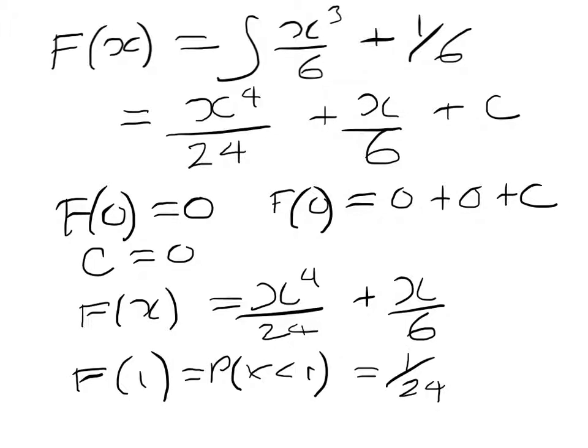So that will equal 1 to the power 4 over 24, which is 1 over 24 plus 1 over 6. Now 1 over 6 is 4 over 24. So 1 over 24 and 4 over 24 will give me an answer of 5 over 24, the probability that x is less than or equal to 1.